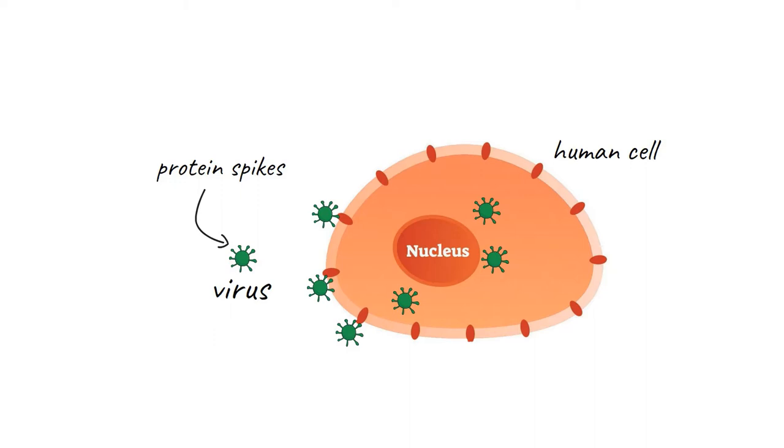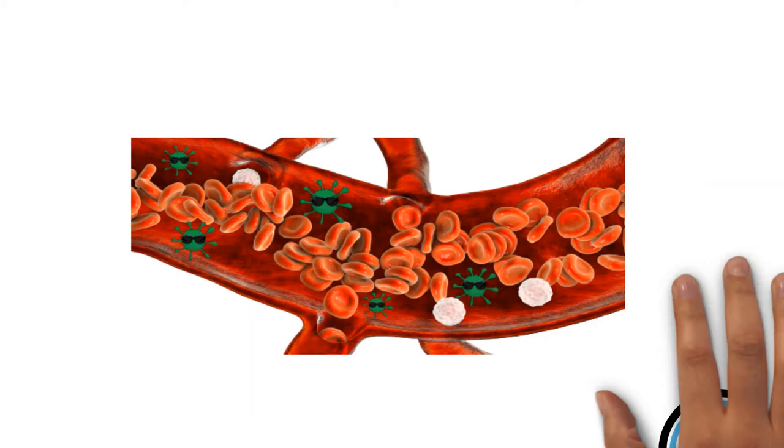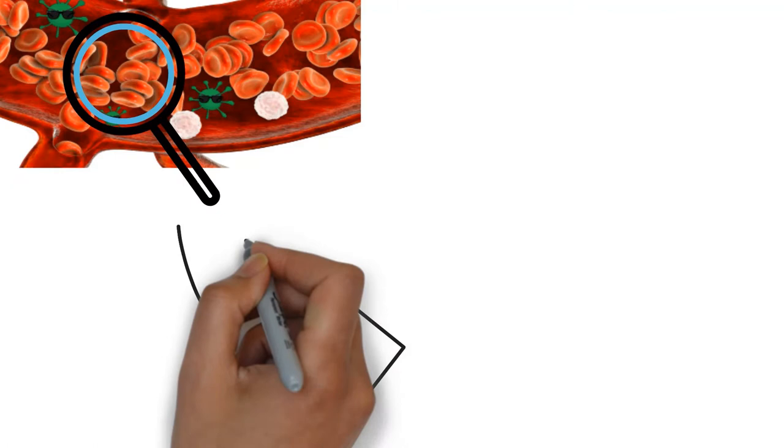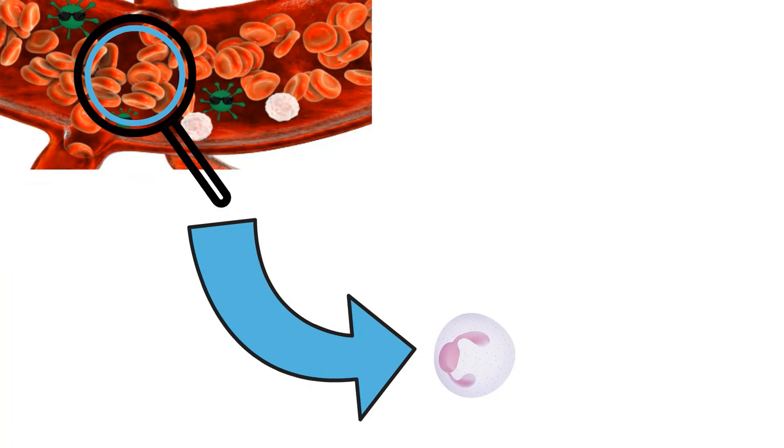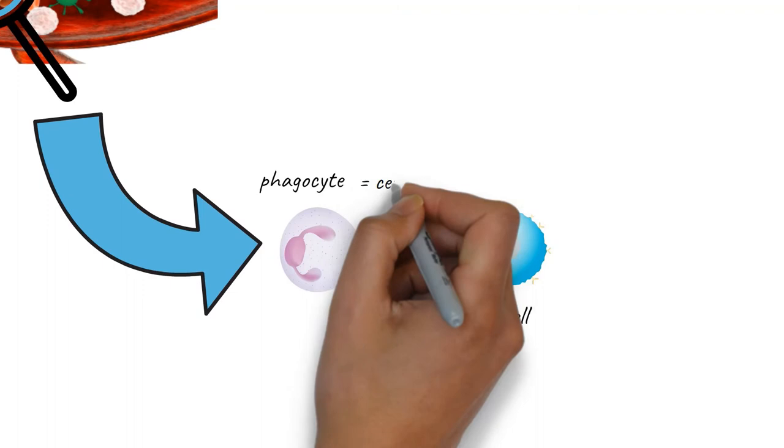Luckily, when a virus manages to get into our bodies, we are not defenseless. Special cells circulate in the bloodstream and hunt down viruses and other things that can make us ill. These cells are part of the immune system. Two of the most important are called phagocytes and B cells.